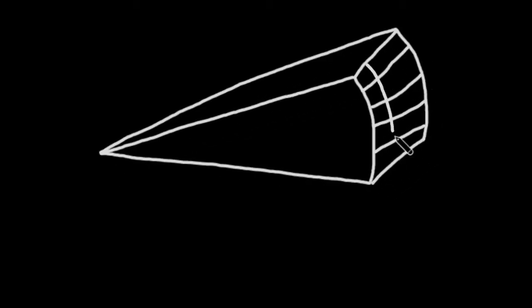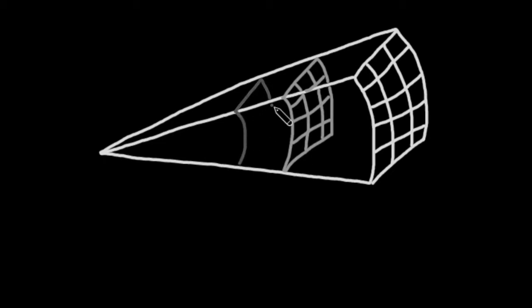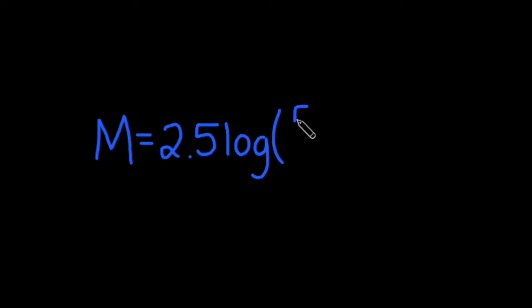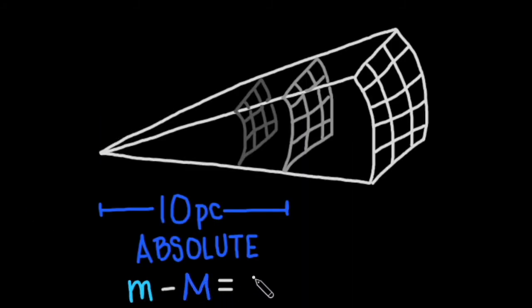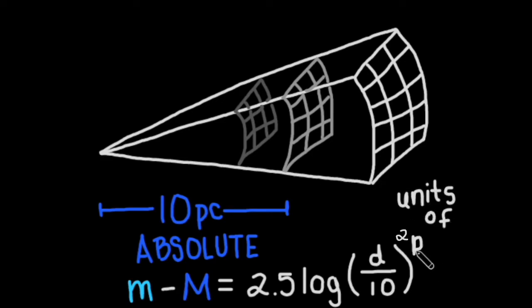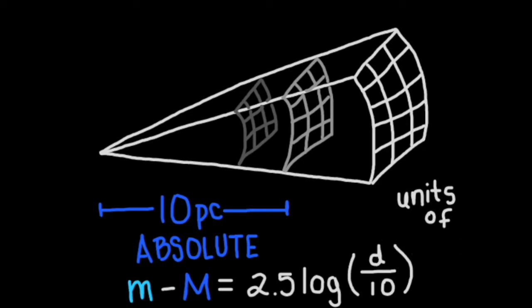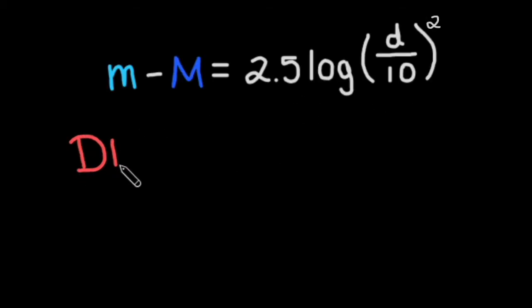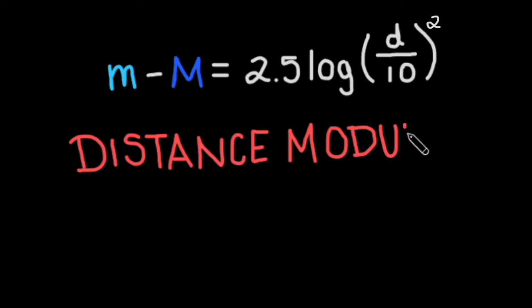Because apparent magnitude is based on flux, it varies according to the object's distance. To more accurately compare celestial objects with each other, we standardize the magnitude scale by defining an absolute magnitude — the magnitude the object would have if it were only 10 parsecs away. So the absolute magnitude is 2.5 times the log of the object's flux compared to what its flux would be at 10 parsecs away. We can then compare the apparent and absolute magnitudes with the distance modulus equation: apparent magnitude minus absolute magnitude equals 2.5 times the log of the distance over 10 squared, or 5 times the log of d over 10, where d is the distance to the star in parsecs. This equation is famously known as the distance modulus.